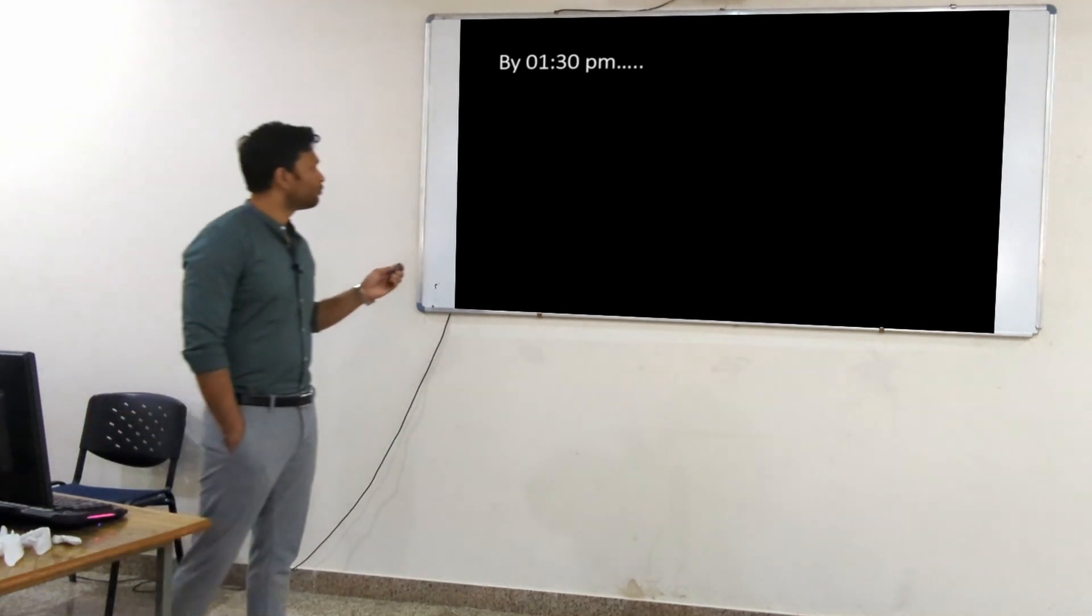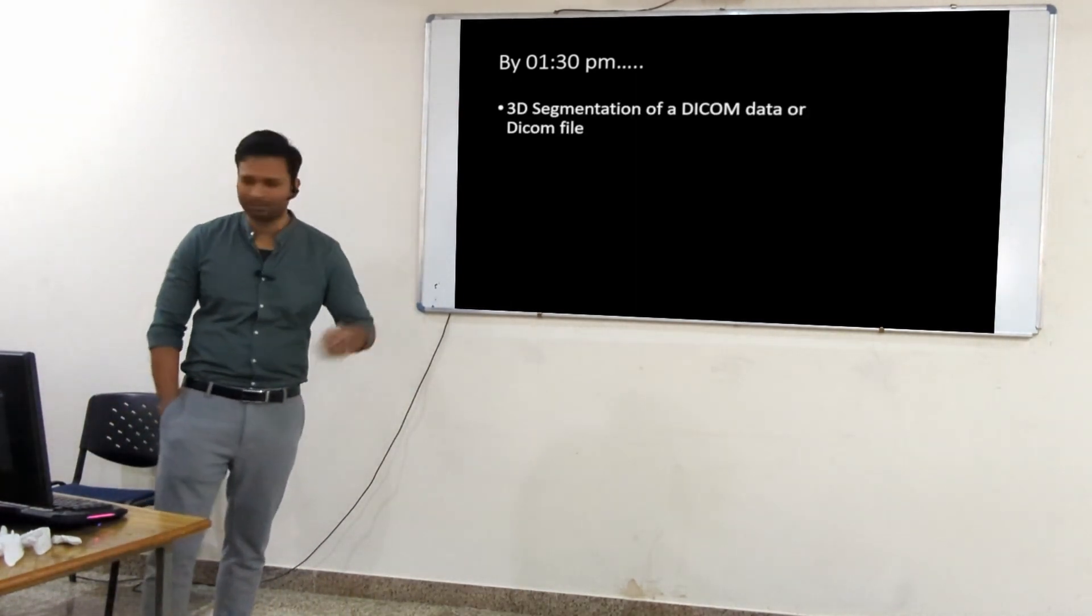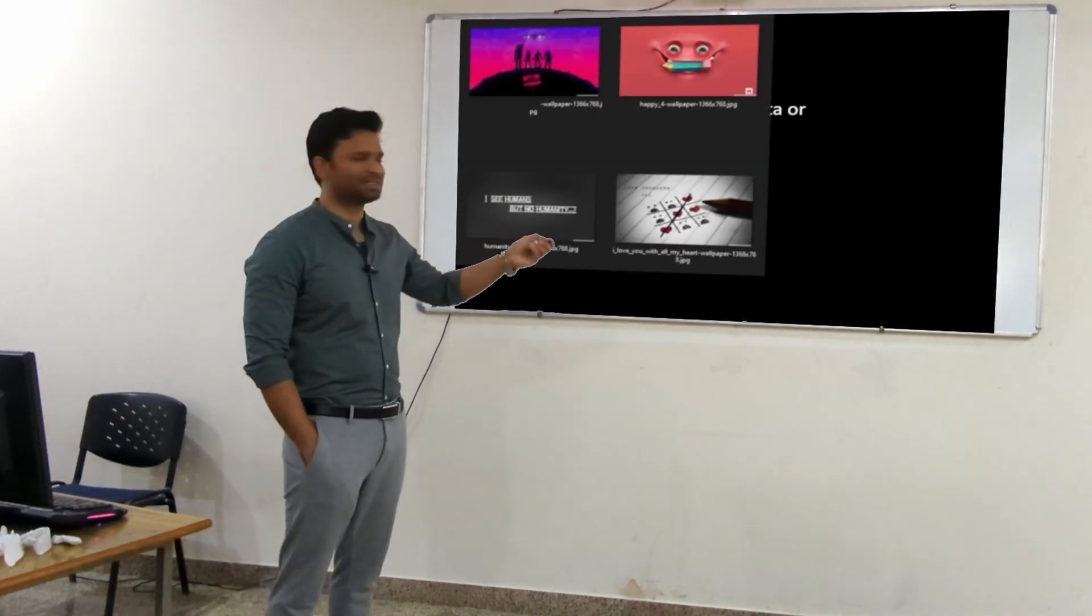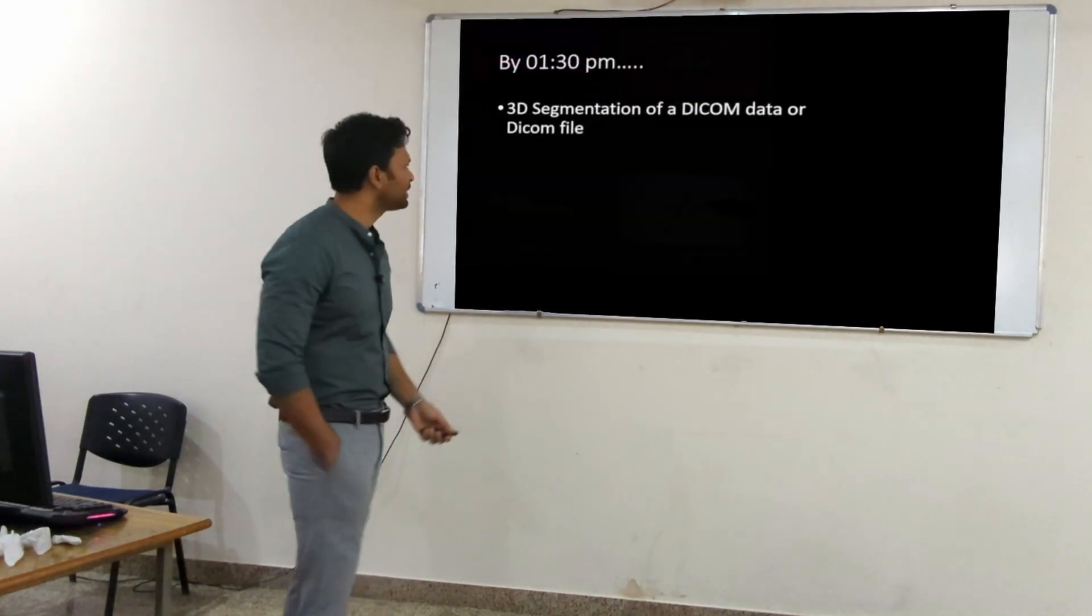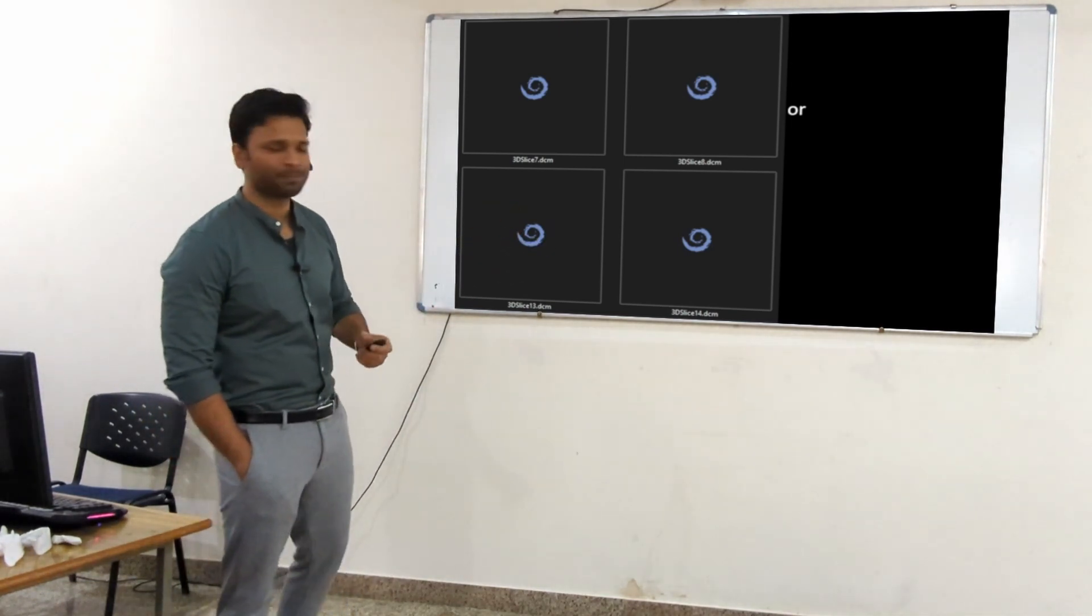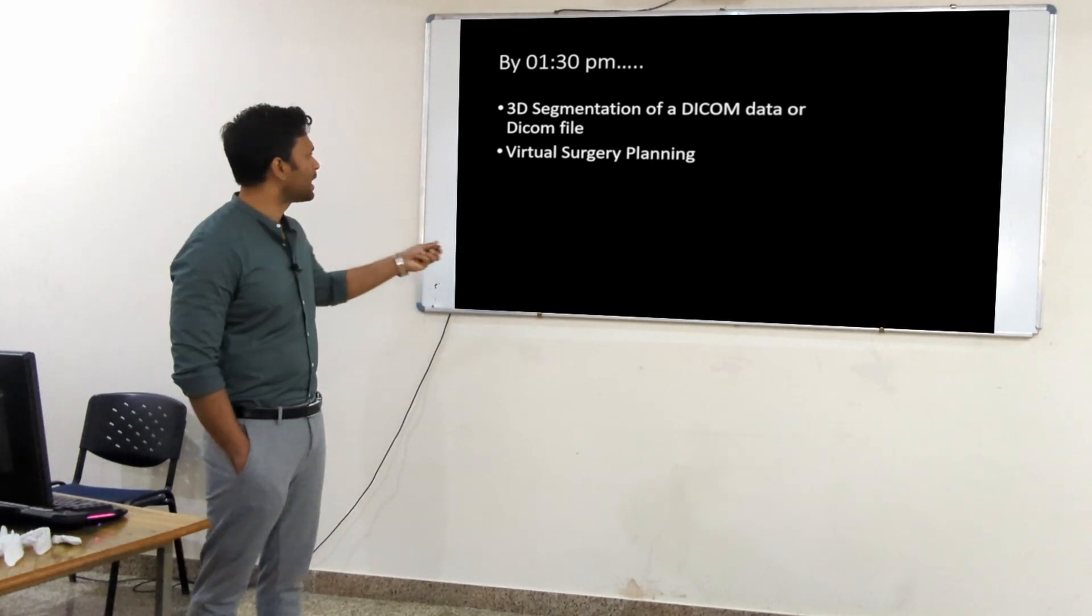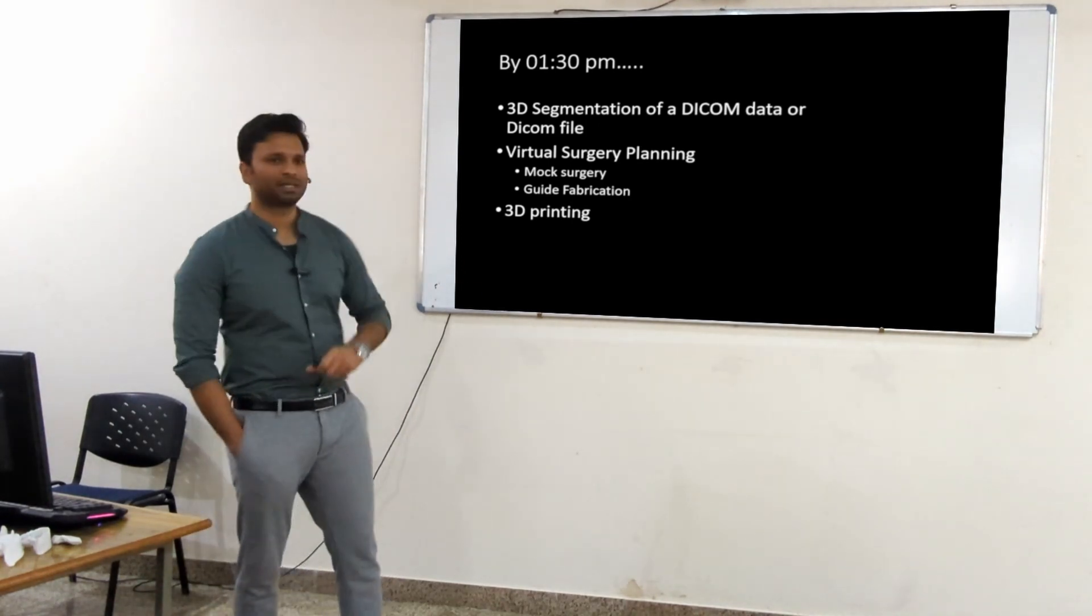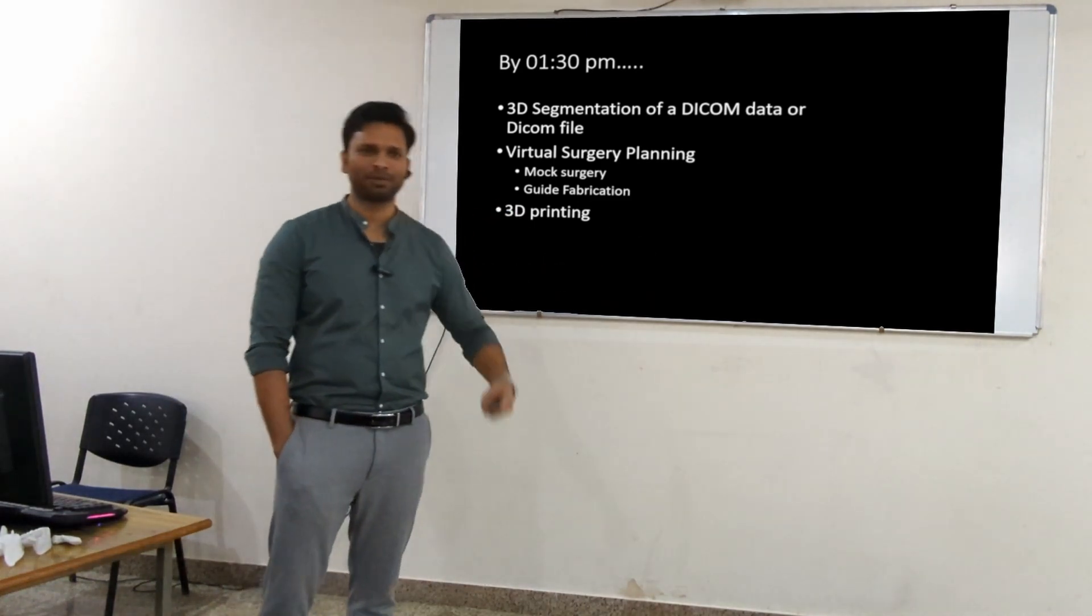By 1:30 PM today, I'll make sure you're at least a little familiar with the process called 3D segmentation of DICOM data. DICOM file - you know image files have extension .jpg - same way DICOM is the medical image format with extension .dcm. We're going to play with these files today and have some idea about how virtual surgery planning is done. This is going to be a hands-on demo part covering mock surgery, guide fabrication, and 3D printing. I'll show you what the slicing procedure is and the printer - how it works. We have a printer in the department.